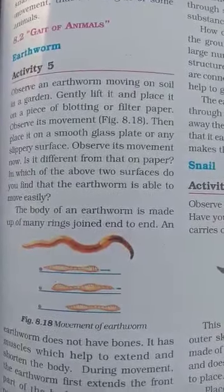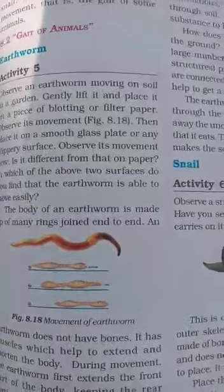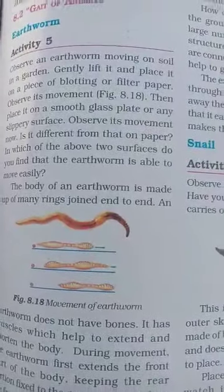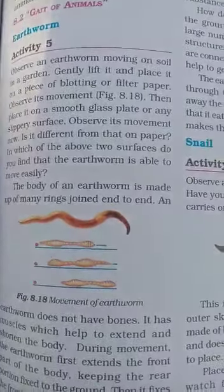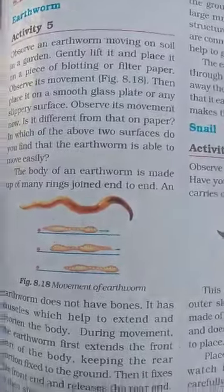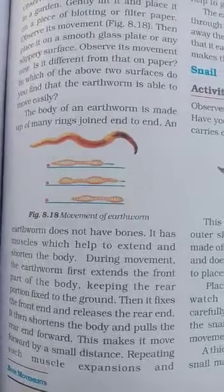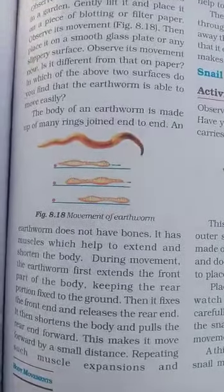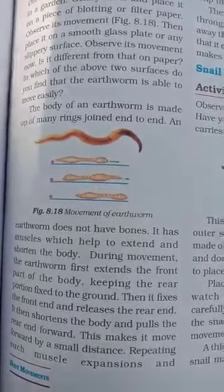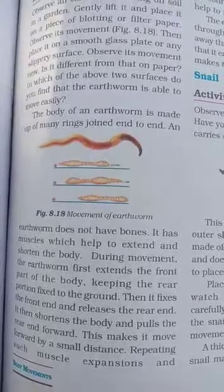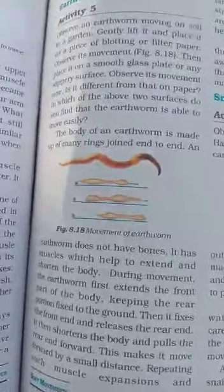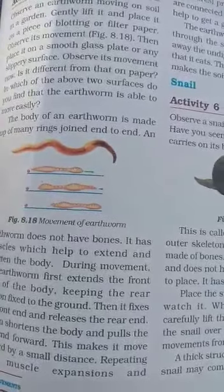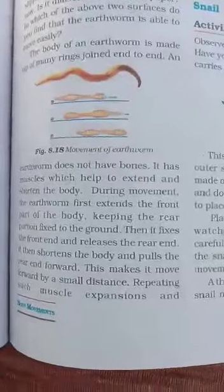The body of an earthworm is made up of many rings joined end to end — many ring-like structures. See figure 8.18: movement of earthworm. An earthworm does not have any bones. It has muscles which help to extend and shorten the body. You can observe the movement of earthworm — muscles alone help in its movement.